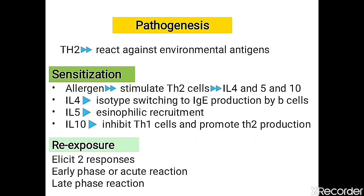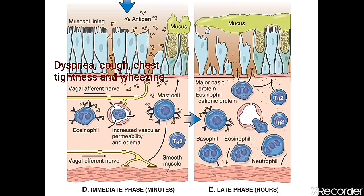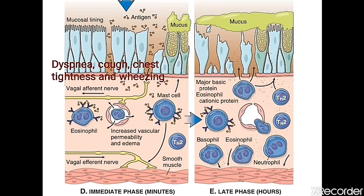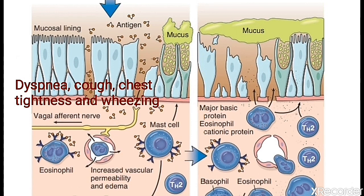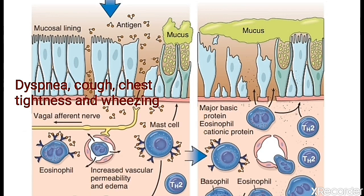Upon re-exposure, there are two responses: an early phase — acute reaction within minutes — and a late phase reaction lasting up to 24 hours. In the early phase, sensitized mast cells are activated by the antigen. This stimulates vagal nerve fibers and IgE-bound mast cell antibodies, causing bronchoconstriction, vasodilation, and increased vascular permeability, which leads to edema.